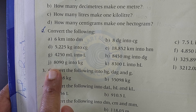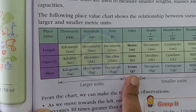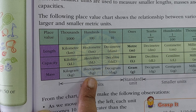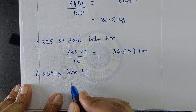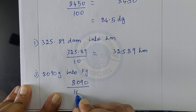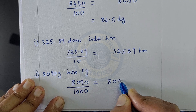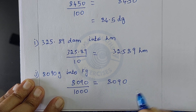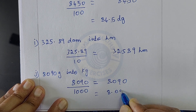Convert 8090 grams into kilograms. We are converting from gram to kilogram — smaller to larger — so we divide. Gram to decagram is 10, decagram to hectogram is 100, hectogram to kilogram is 1000. Divide 8090 by 1000. Count three zeros, place decimal after three digits: the answer is 8.090, or 8.09 kg.